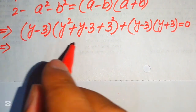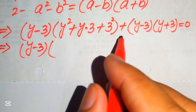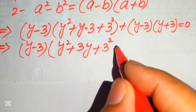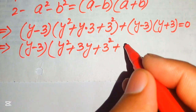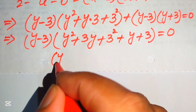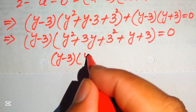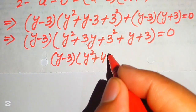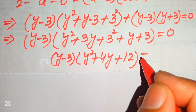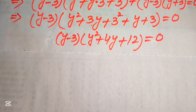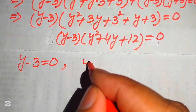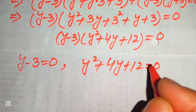We notice that (y minus 3) is a common factor in both terms. Factoring it out gives (y minus 3)(y² plus 3y + 9 + y + 3) equals 0. Combining like terms inside the bracket: 3y plus y becomes 4y, and 9 plus 3 becomes 12, so we get (y minus 3)(y² plus 4y plus 12) equals 0.